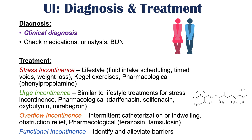For functional incontinence, it is important to identify and alleviate the barriers preventing the patient from getting to the toilet. In summary, each type of incontinence has a different clinical presentation, different risk factors, and different treatments. Stress incontinence focuses on lifestyle changes, Kegel exercises, and possibly pharmacological treatment. Urge incontinence relies more on pharmacological treatments for an overactive bladder. Overflow incontinence may require catheters and alpha antagonists like terazosin and tamsulosin.